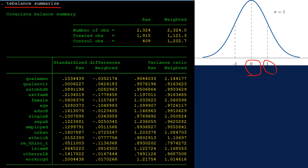In the table, values in the left-hand side are before the adjustment, and values in the right-hand side are after the adjustment. Many differences of covariates became closer to 0 and their variance became closer to 1.